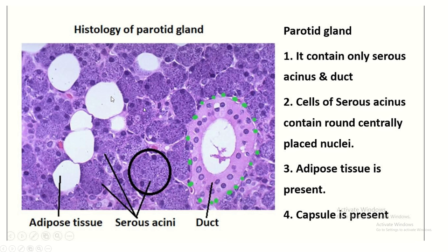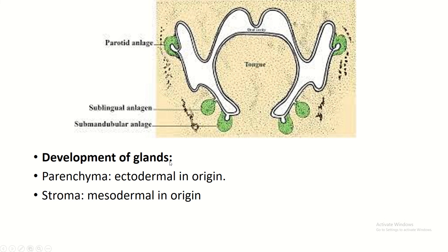Histology of the parotid gland: it contains serous acini and ducts. The staining of the serous acini is more intense than the ducts. The serous acini contain cells with rounded nuclei. Development: the parenchyma is ectodermal in origin and the stroma is mesodermal in origin.